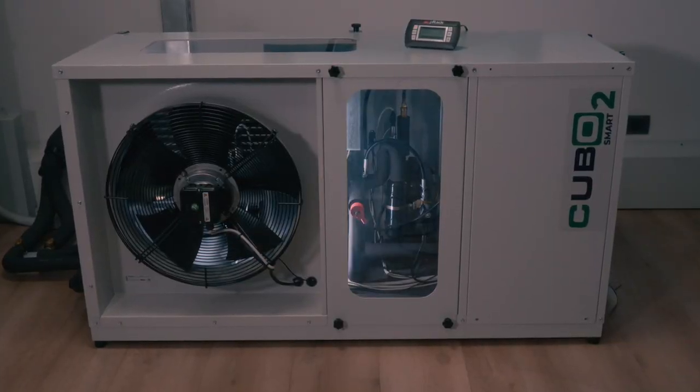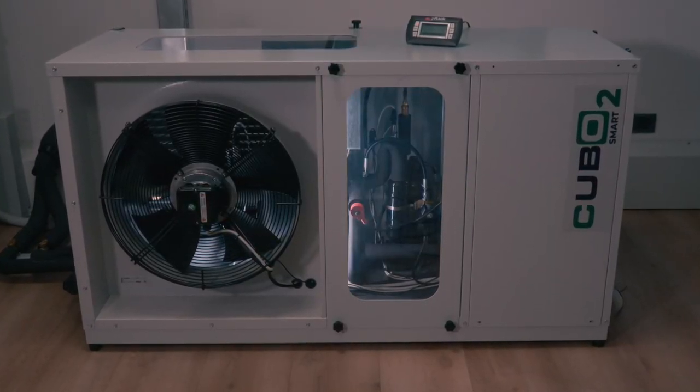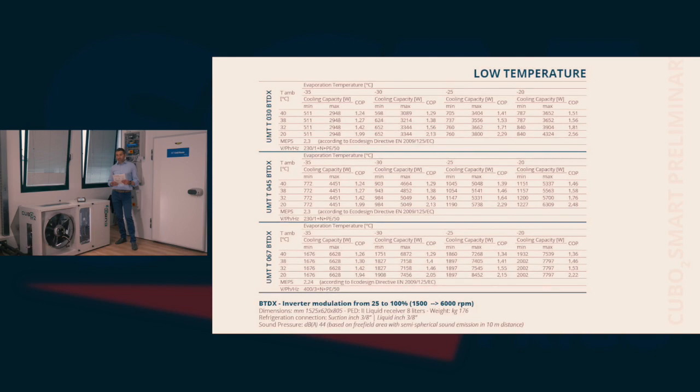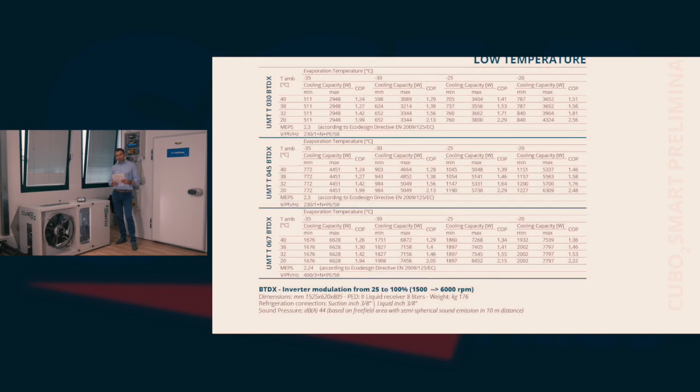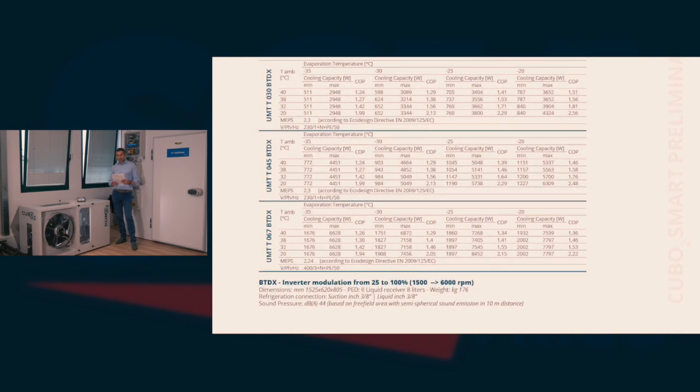Qubo2 Smart is available for two different applications. For low temperature uses, three models: 3.5, 5 and 6.5 kW are available.